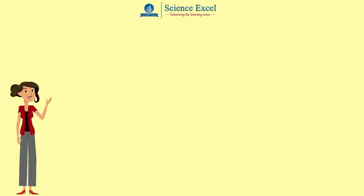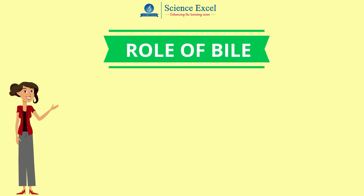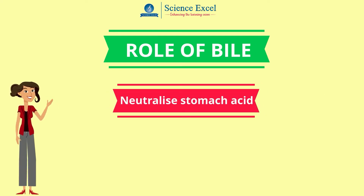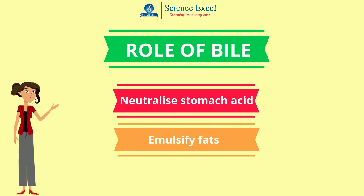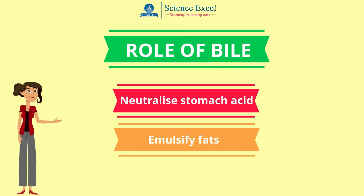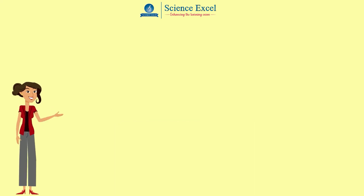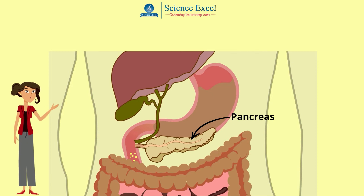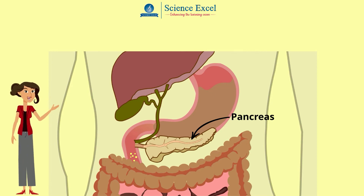Overall, bile has two roles to play: to neutralize stomach acid and to emulsify fats. Now let us understand the role of the pancreas in the process of digestion.